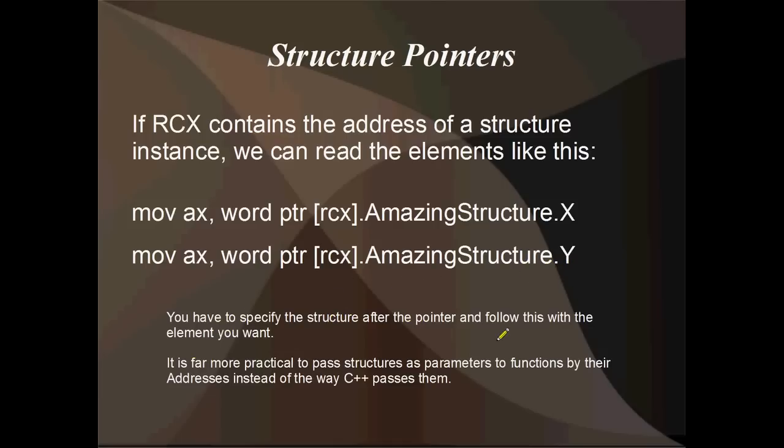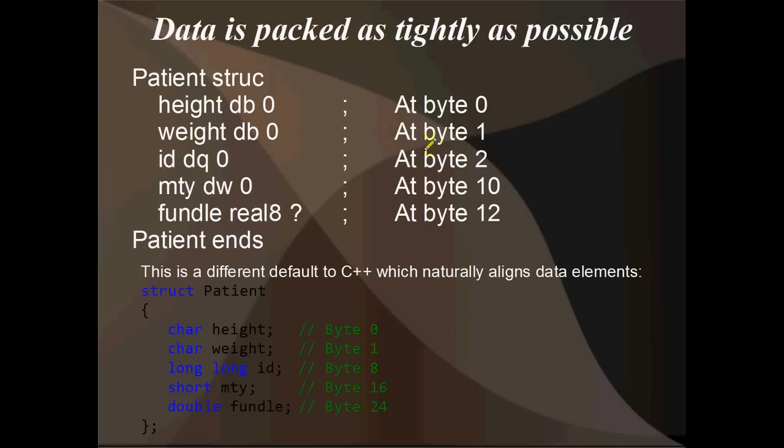So basically all it's going to do is for this one here, RCX AmazingStructure dot X, it's going to add nothing to RCX. For this one down here it's going to say, oh okay, he means RCX plus 2. That's all that the structure means. AmazingStructure.Y just means plus 2. You have to specify the structure after the pointer. It's far more practical to pass structures as parameters to functions by their address. So you put the pointer in RCX and pass it like that.